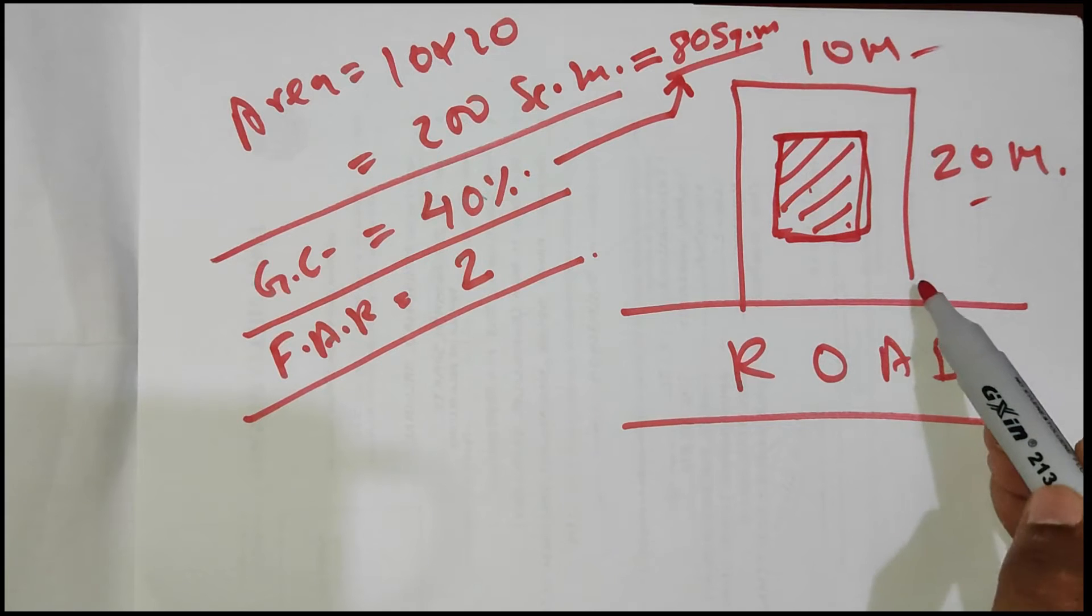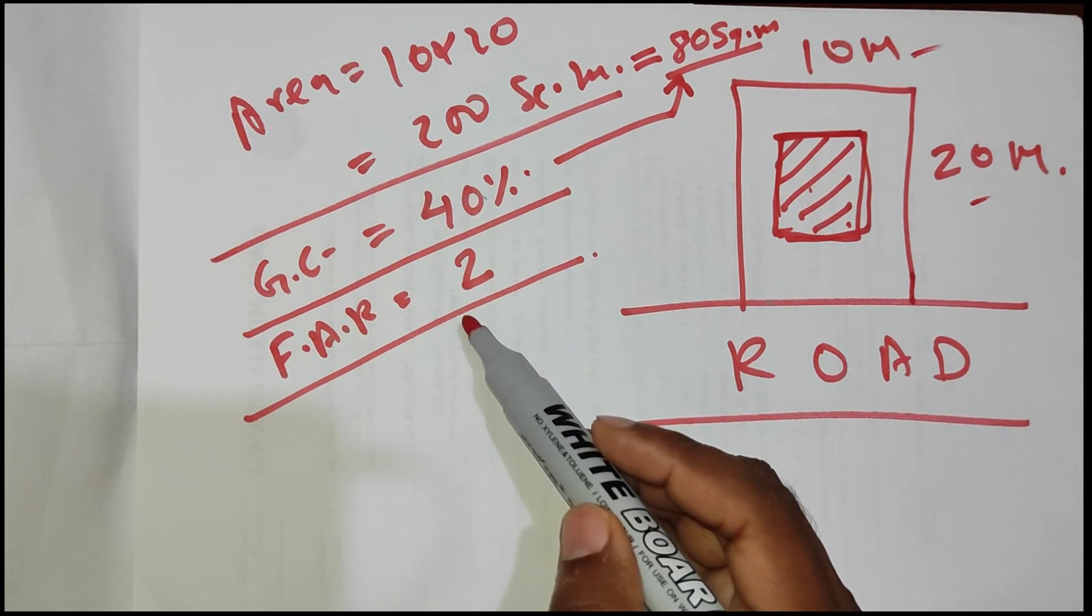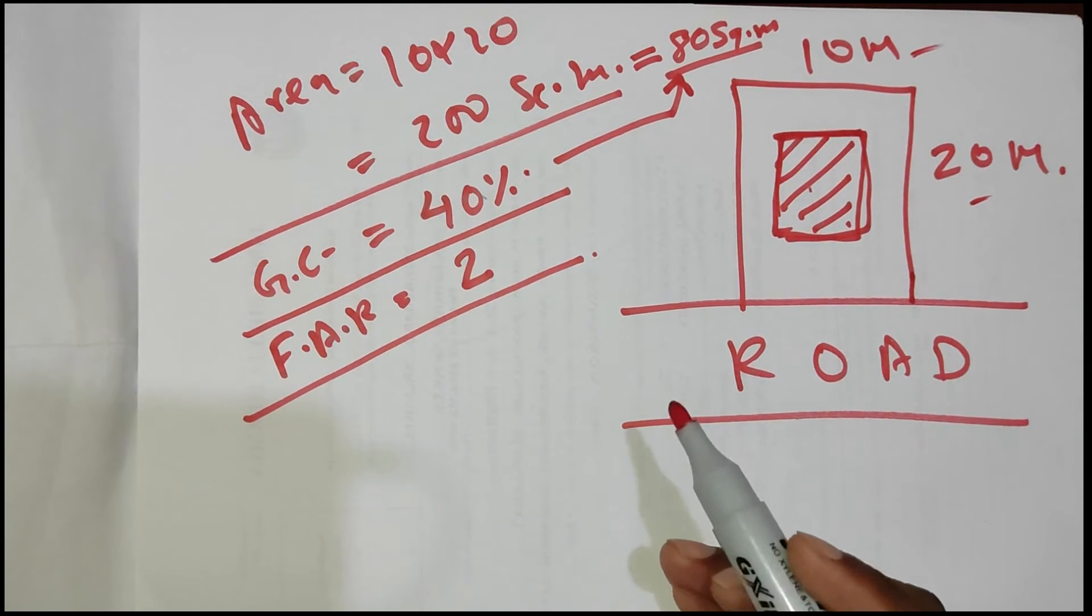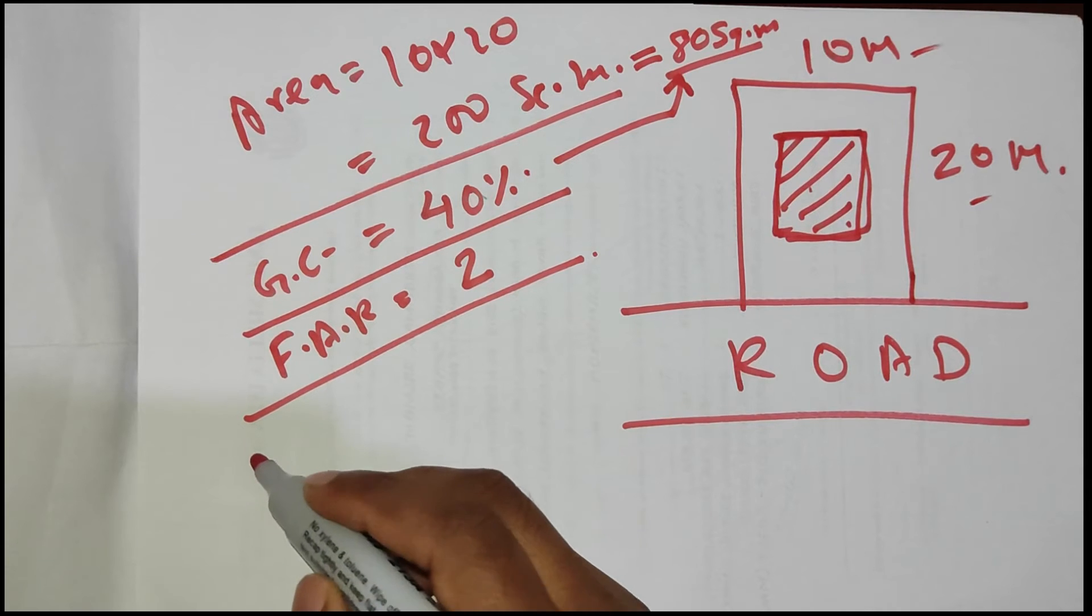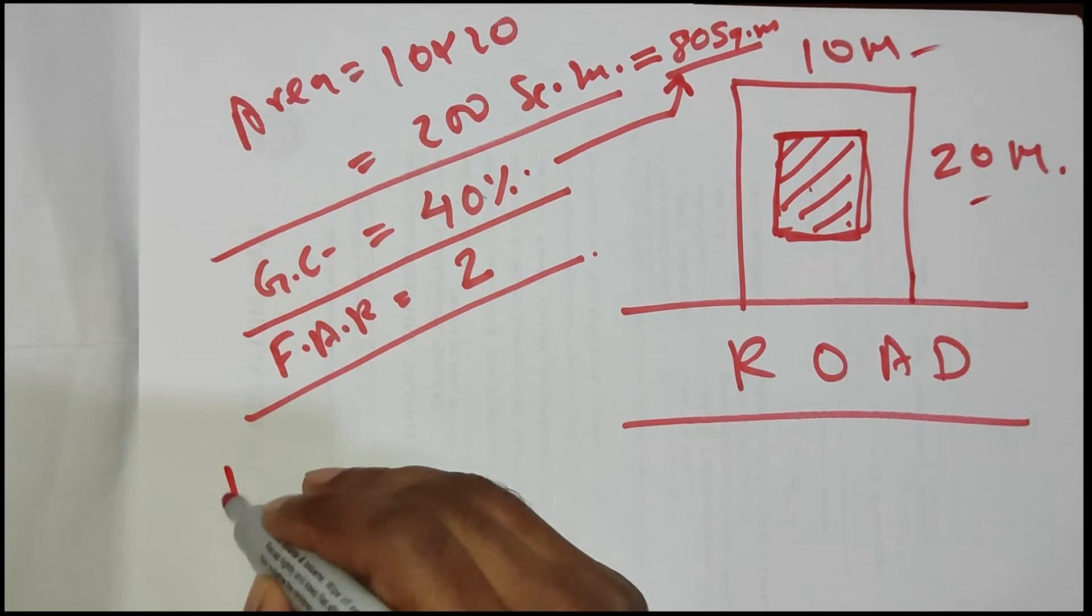That means maximum we can build on this site is 80 square meters. This is the space which we can occupy. Now before proceeding to the number of floors, we should know the total built-up area.